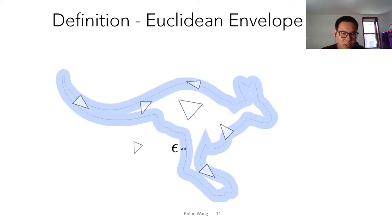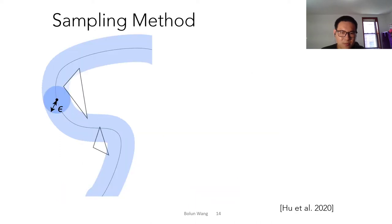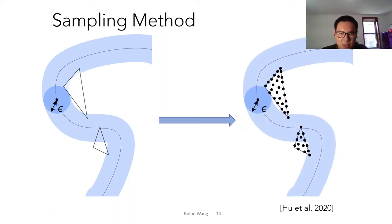However, it's more challenging to check if a query triangle is inside the envelope. Because if a triangle is inside, it requires all the points of this triangle to be inside the envelope. So the most common way of doing this is the sampling method, which means we sample the triangle and check point by point. If all the sampling points of this triangle are inside the envelope, we can regard this triangle to be inside.